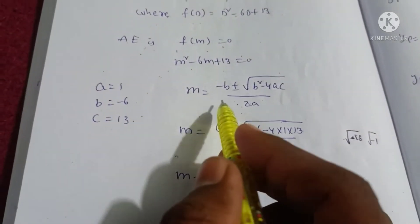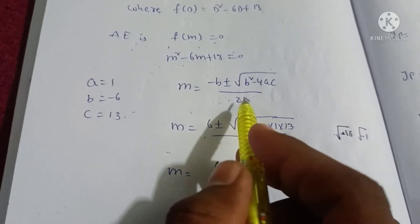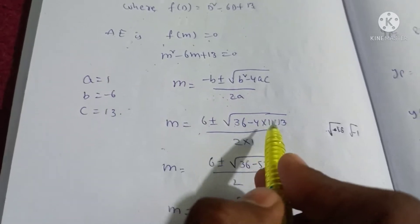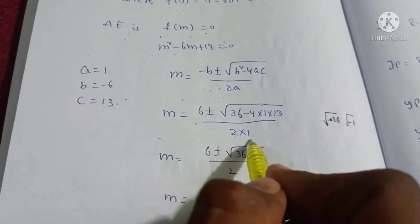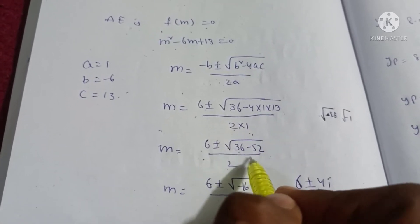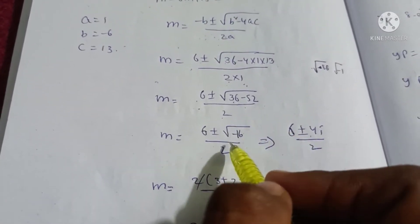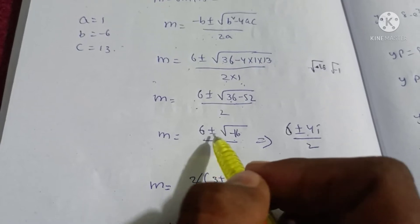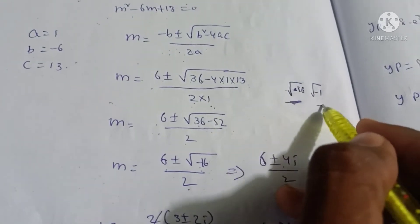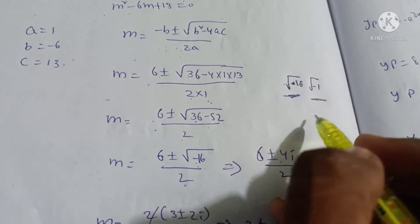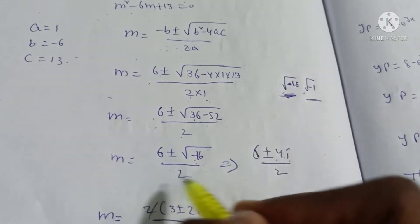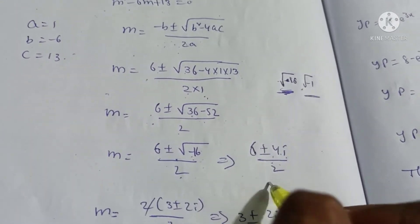m equals minus of minus 6, plus or minus root of 6² minus 4 times 1 times 13, all divided by 2 times 1. That gives 6 plus or minus root of 36 minus 52, divided by 2. This equals 6 plus or minus root of minus 16, divided by 2. Since root of minus 16 is 4i, m equals 6 plus or minus 4i, divided by 2, giving m equals 3 plus or minus 2i.